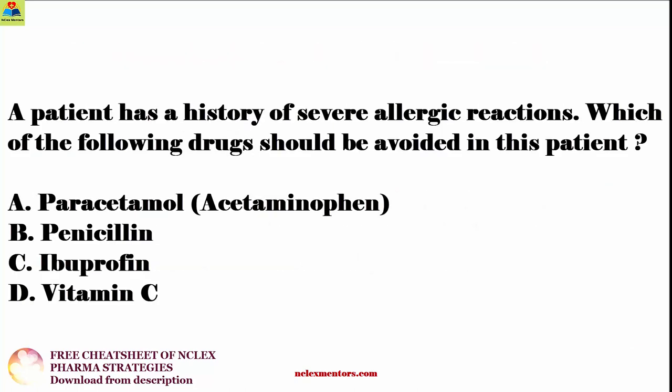A patient has a history of severe allergic reactions. Which of the following drugs should be avoided in this patient? A. Paracetamol, B. Penicillin, C. Ibuprofen, D. Vitamin C. Answer is B. Penicillin. Knowing the potential adverse effects and contraindications of a drug can help identify when it is not appropriate for a patient. In this case, the patient has a history of severe allergic reactions, and it is important to avoid administering a drug that has a high risk of causing anaphylaxis.